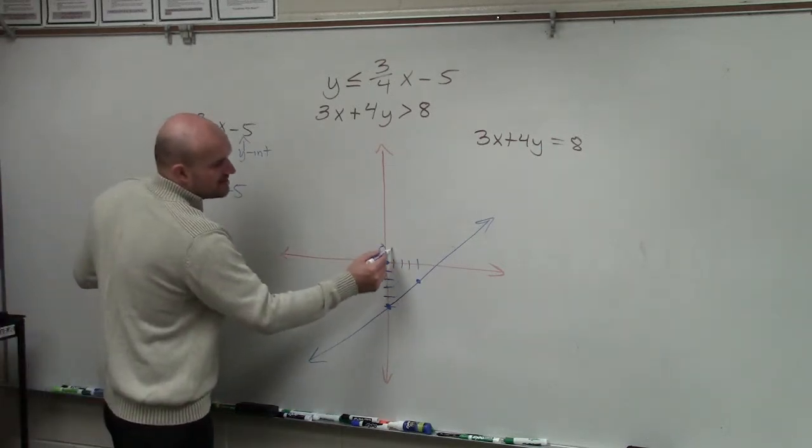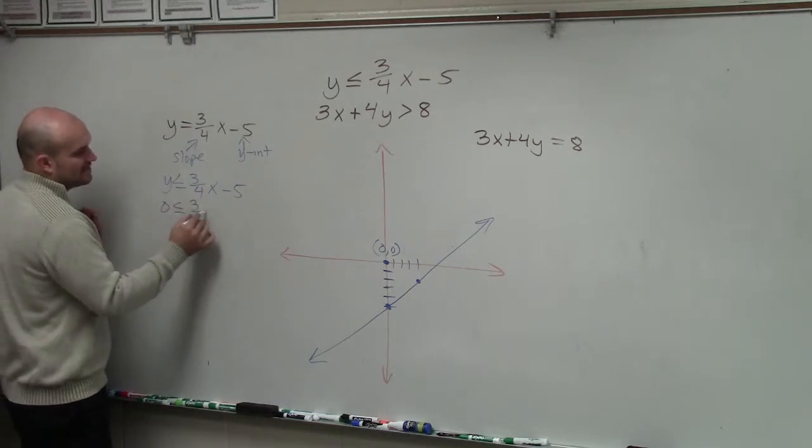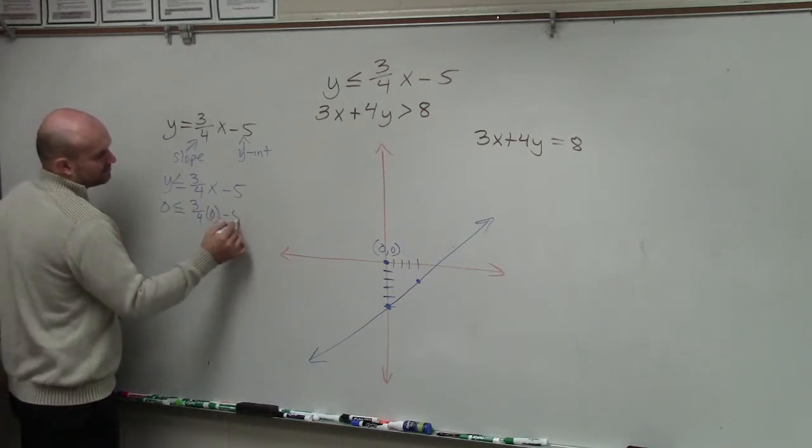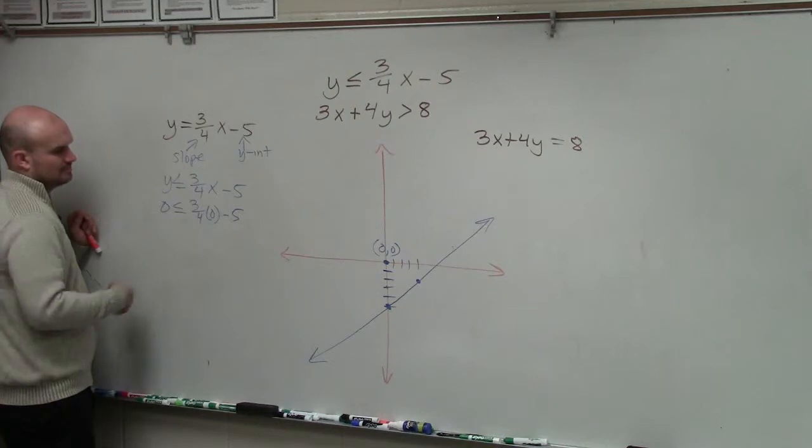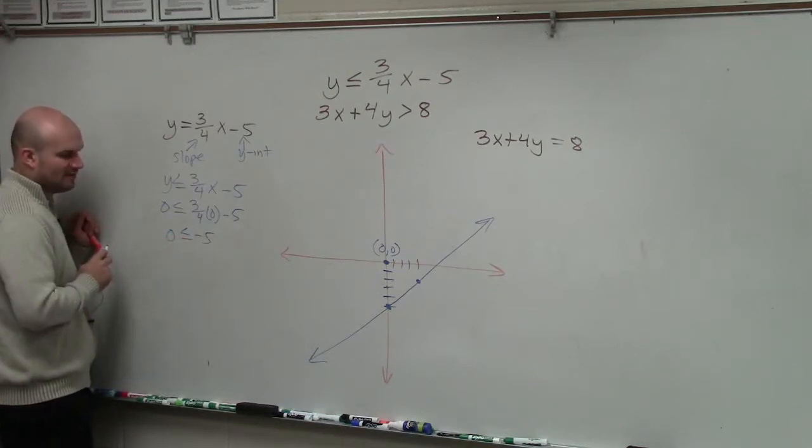0, 0 is not on the graph. So I plug in 0 in for y and 0 in for x. Therefore, I have 0 is less than or equal to negative 5. Is that true or is that false?